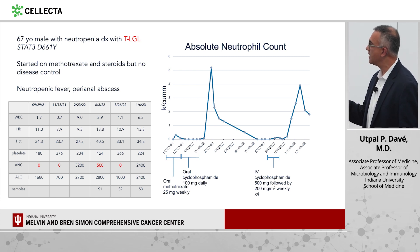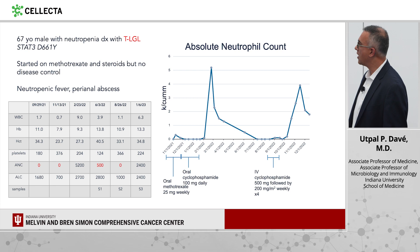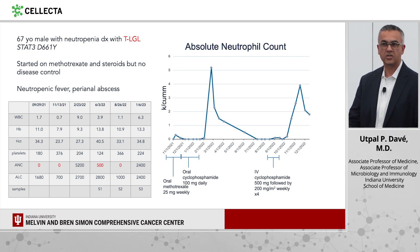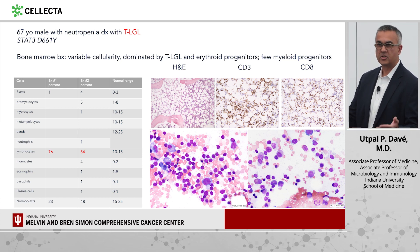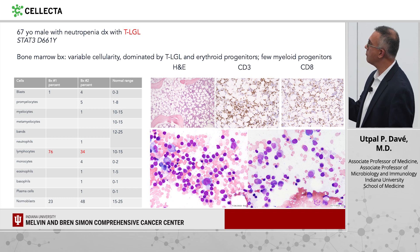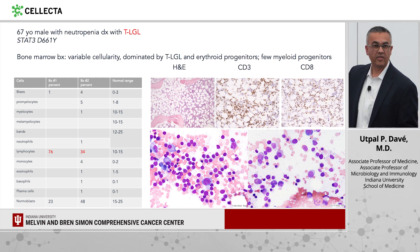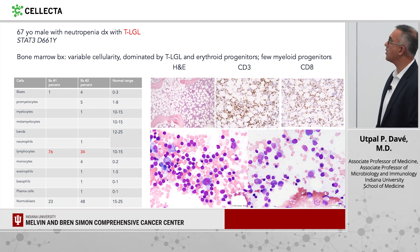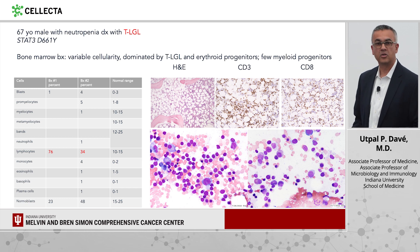Some of his disease course is shown in this ANC curve. In the red, you can see that his neutrophils were zero for prolonged months in the peripheral blood, whereas the lymphocyte count was in the normal range — though the clonal LGL cells comprised about 30–40% of the periphery. When we did bone marrow biopsies at those specific time points, the entire bone marrow was variable in cellularity, but the myeloid progenitors were completely missing. He was completely eliminating myeloid progenitors from his bone marrow, and most of the cellularity was CD3-positive and CD8-positive LGL cell infiltration.